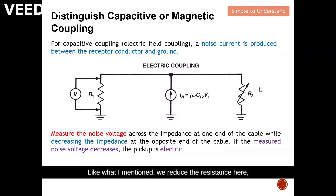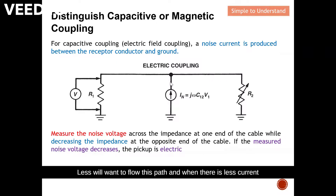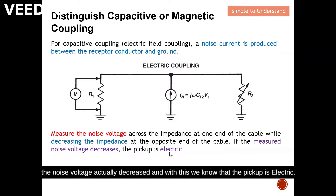As mentioned, when we reduce the resistance, more current is prone to flow that path and less will flow through the victim. When there is less current, the noise voltage decreases, and with this we know that the pickup is electric.